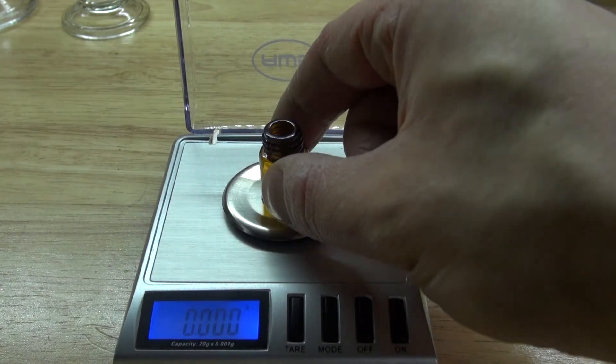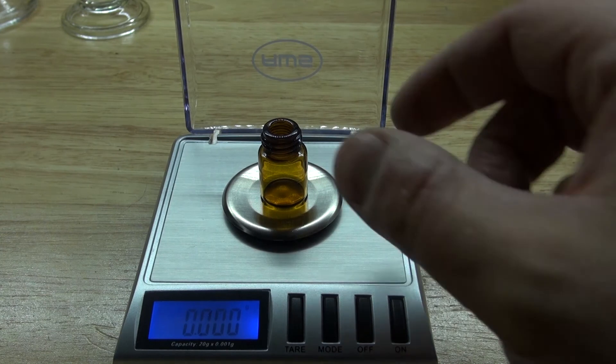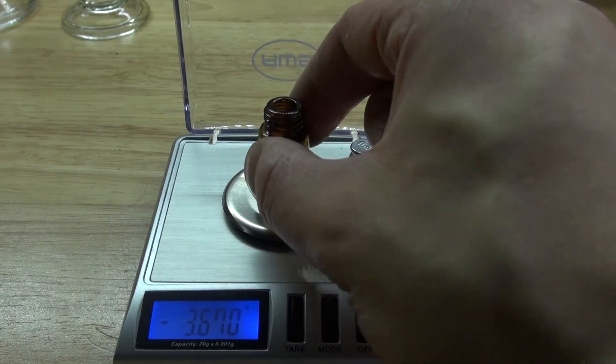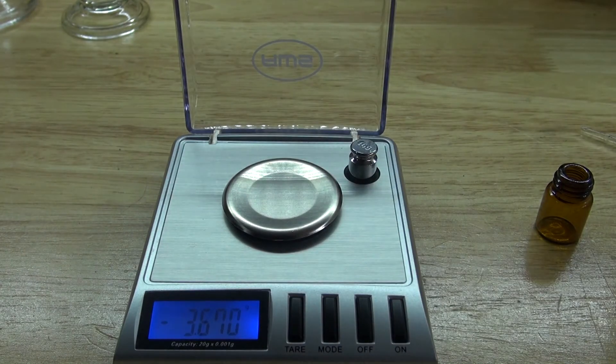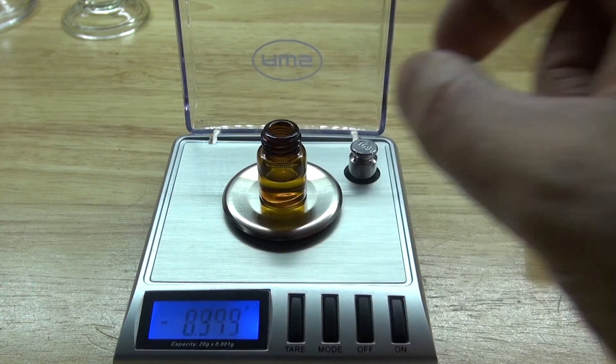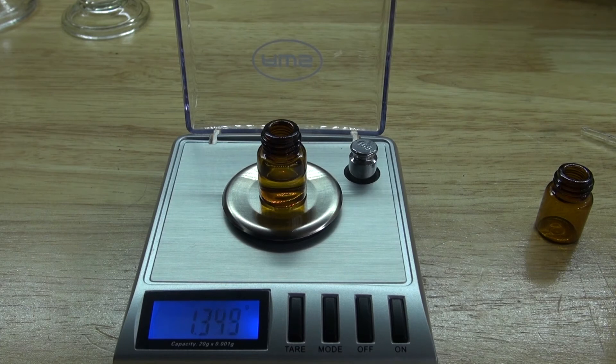Next I'm going to take an empty amber vial, put it on top of my scale, and tare it. I'm going to go into my other amber vial that's containing the rosemary essential oil and concentrated rosemary hydrosol. As you can see I've collected 1.35 grams of rosemary essential oil and concentrated rosemary hydrosol.